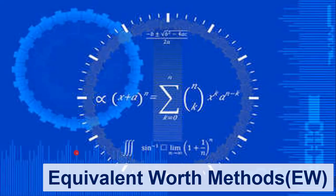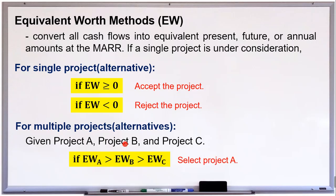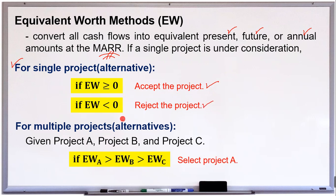Let's start with the first one: the equivalent worth methods, or EW. For this method, in order to evaluate a single project or multiple projects, we convert all cash flows into equivalent present, future, or annual amounts at a given minimum attractive rate of return, or MARR, expressed in percent. For a single project, if the equivalent worth is greater than or equal to zero, we accept the project; otherwise, we reject it.